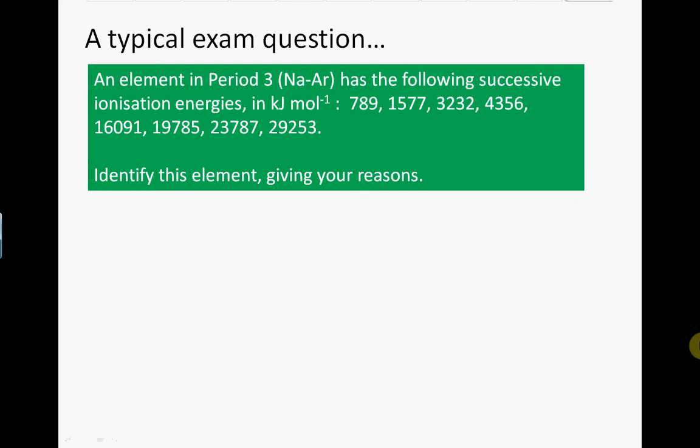Now let's look at a typical exam question for successive ionization energies. An element in period three, that's the period that runs across from sodium at one end to argon the other, has the following successive ionization energies. It gives a list there of the ionization energies, and what we need to do is identify this element and give your reasons how you've reached that conclusion.